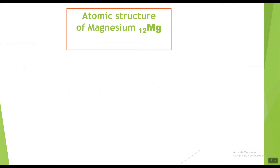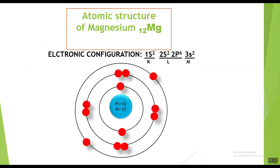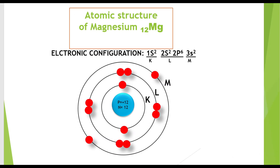Now magnesium. The symbol for magnesium is Mg with atomic number 12, showing it has twelve electrons. The electronic configuration of magnesium is 1s2 2s2 2p6 3s2, showing two electrons in the K shell, eight electrons in the L shell, and two electrons in the M shell. The atomic structure of magnesium shows twelve protons and twelve neutrons in the nucleus, with twelve electrons around the nucleus: two in the K shell, eight in the L shell, and two in the M shell.